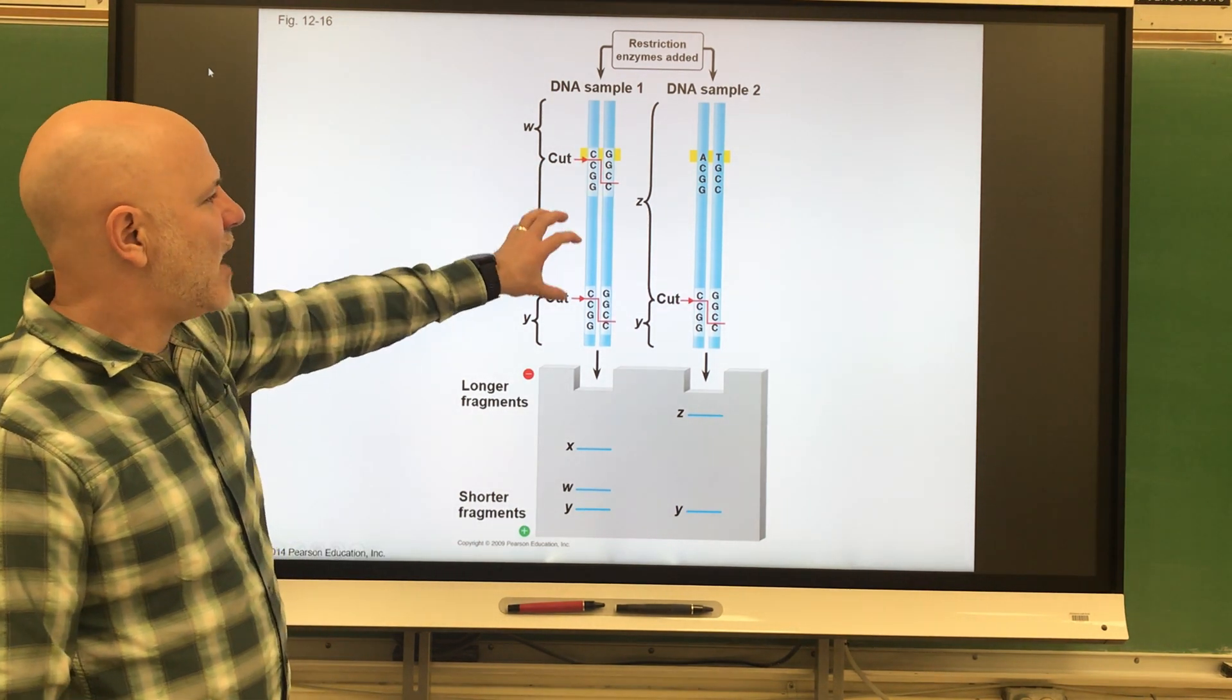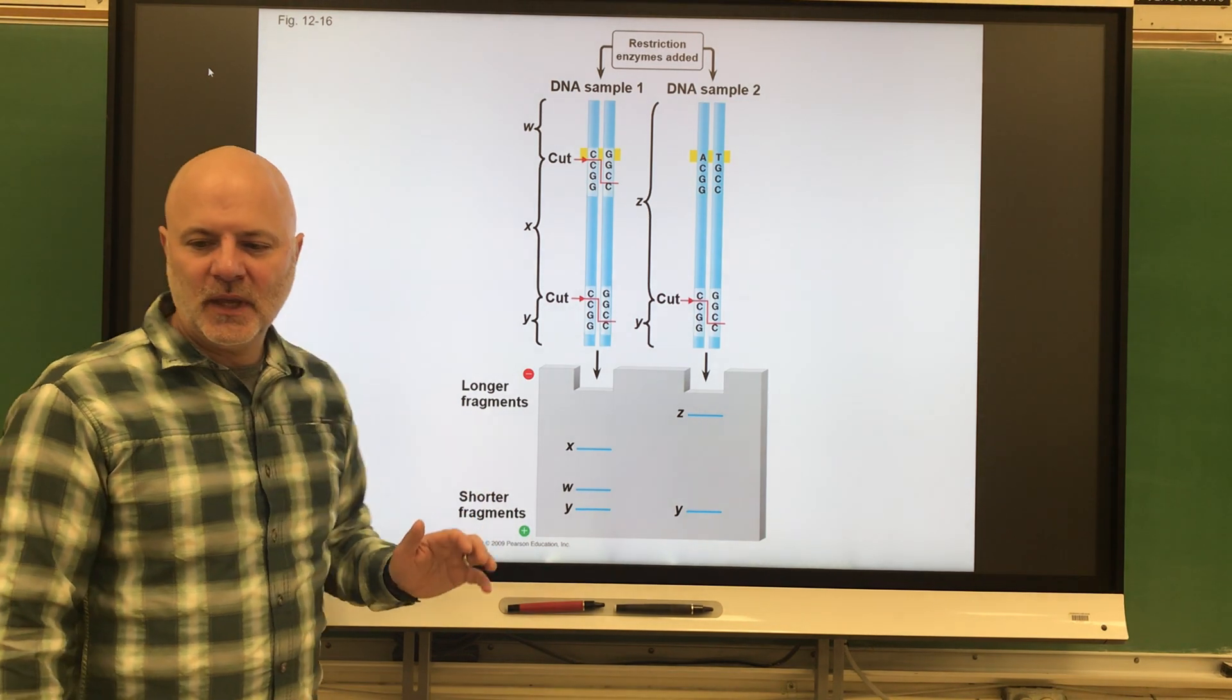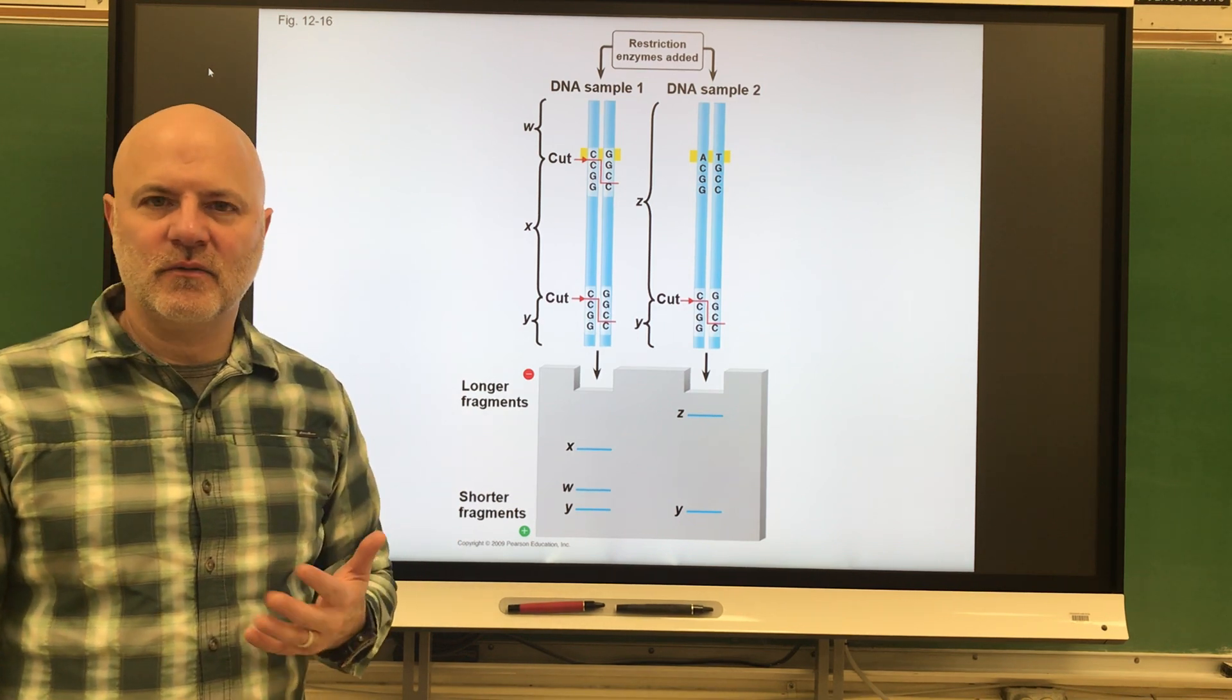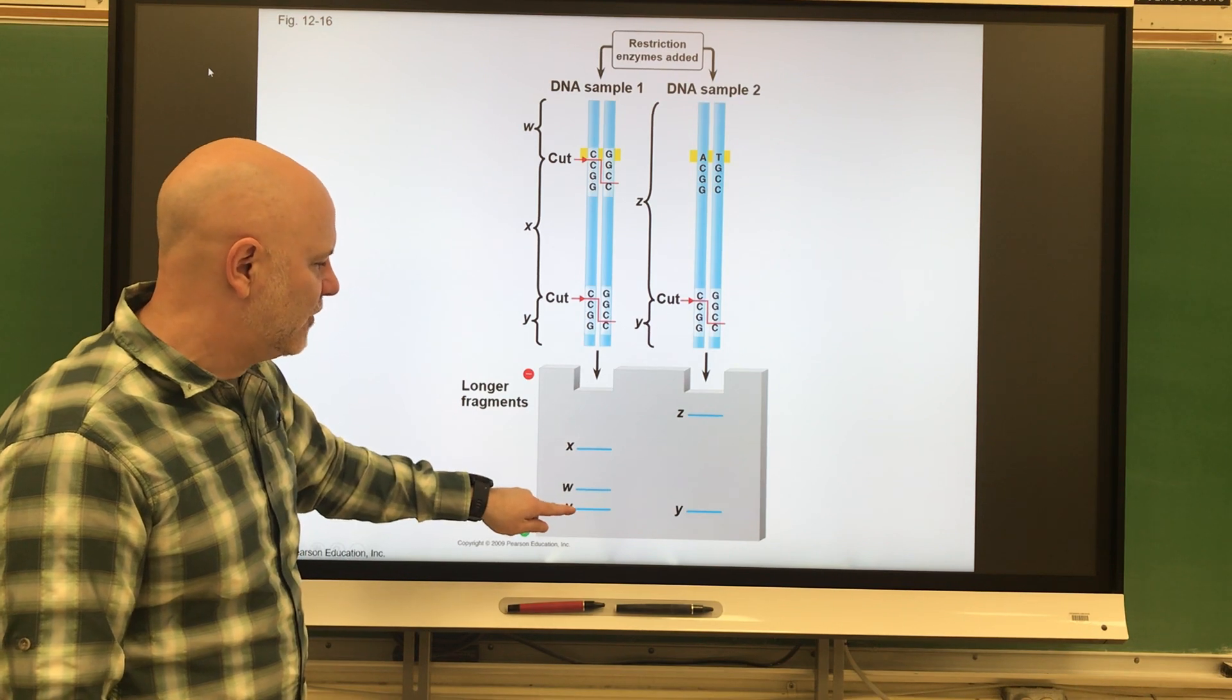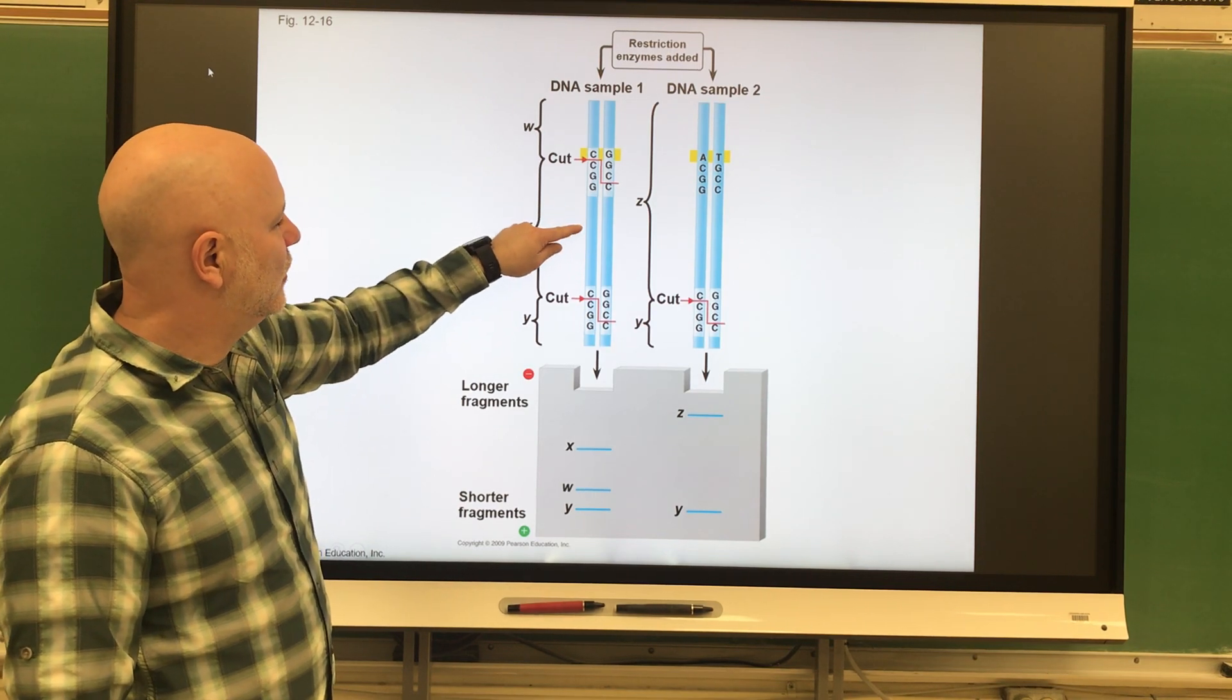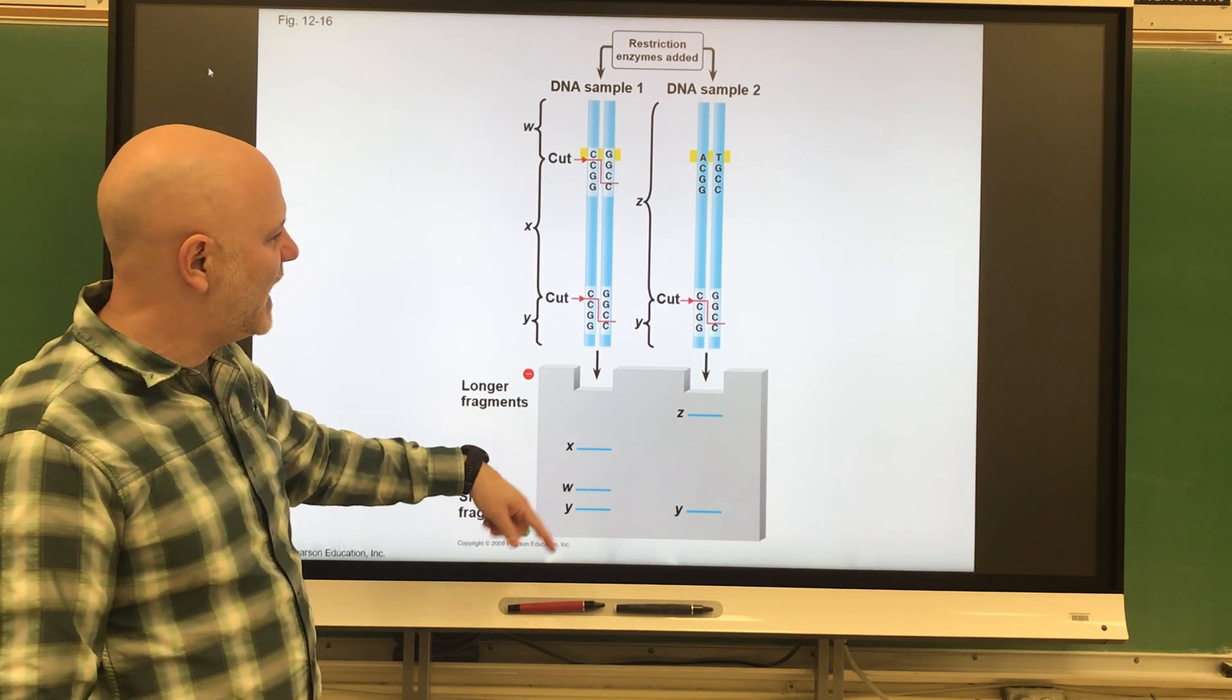We take that and put it into that agarose gel, run it through gel electrophoresis. What happens here is we get what is known as the DNA fingerprint - an individual's unique collection of DNA restriction fragments. The Y fragment being the smallest moves the farthest. The X molecule, because it's the longest of these three, only moves that far. The W molecule moves farther than the X.